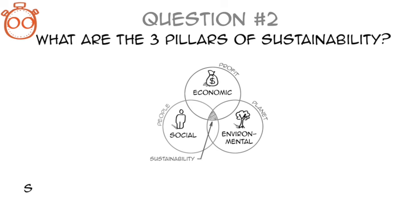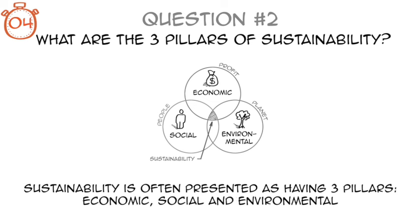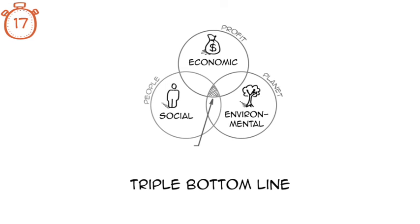Next question. Sustainability is often presented as having three pillars: economic, social, and environmental. This is also known as the triple bottom line, particularly when talking about sustainability and business. The concept is often described as three overlapping circles. Sustainability is typically defined as the place where economy, social realities, and environmental health overlap.